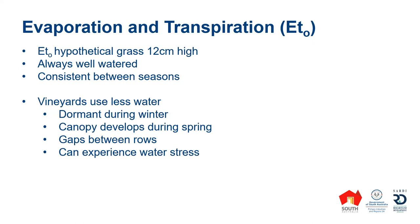If we contrast that 12-centimetre high grass field to a vineyard, our vineyards generally use quite a bit less water. Why? Because they're dormant during winter — there's no leaves, so they use relatively little water then. As the canopy develops during spring, they use a little bit more. But even at full canopy, there are still gaps between the rows where there are no leaves, and the exposed soil doesn't evaporate water at anything like the rate of the canopy. Vineyards also experience water stress, and when the vines are stressed, they generally shut their stomata, which means they're also using less water.